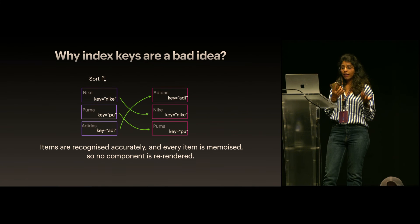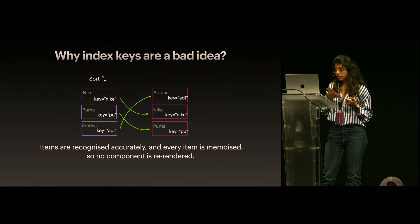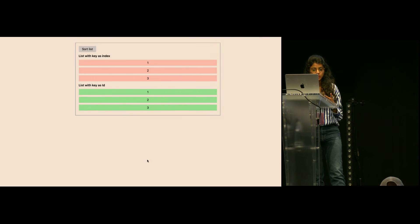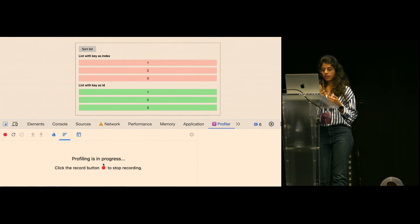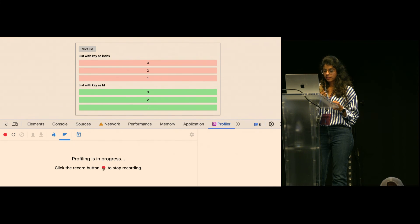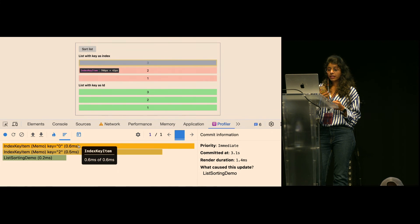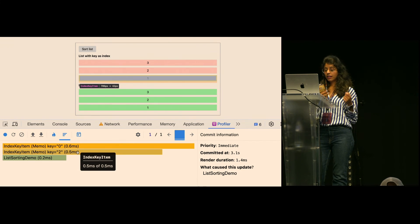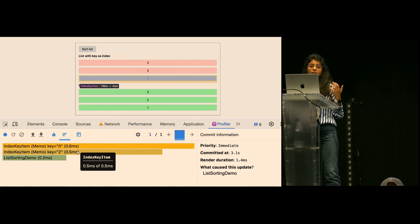Items are recognised accurately and every item is memoized, so no component is unnecessarily re-rendered. Let's check this in the profiler. We have a sorting list — clicking Sort, then stopping the recording, we can see that key 2 and key 0 got re-rendered, but none of the elements with ID-based keys got re-rendered. This confirms that using index as keys on a dynamic list causes unnecessary re-renders.